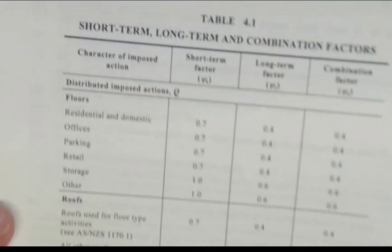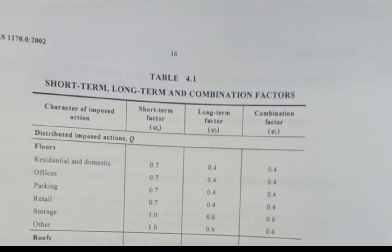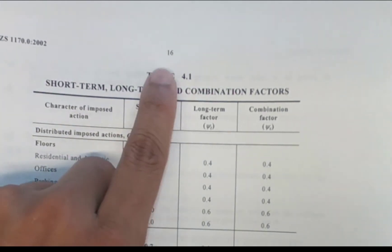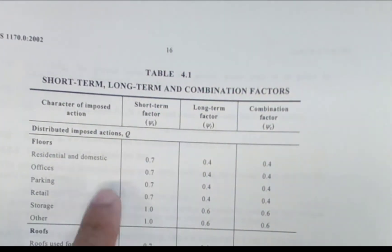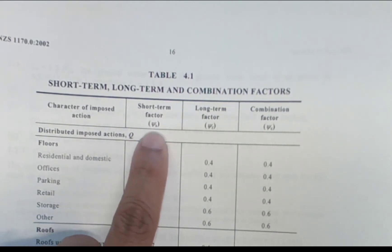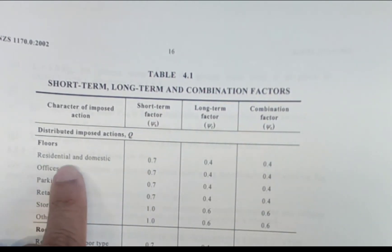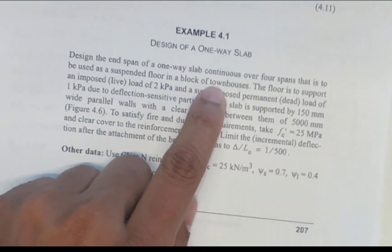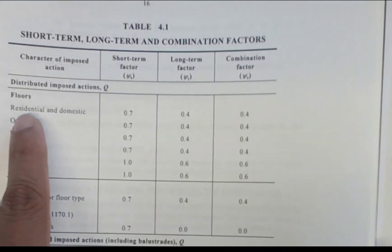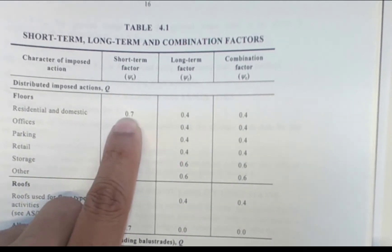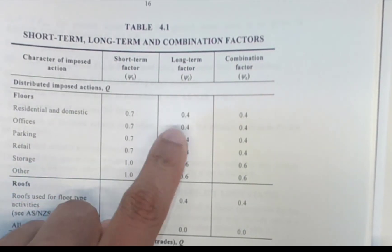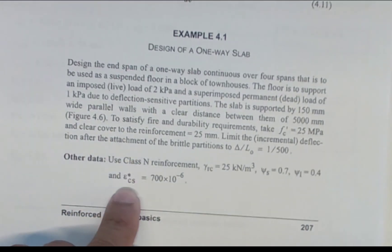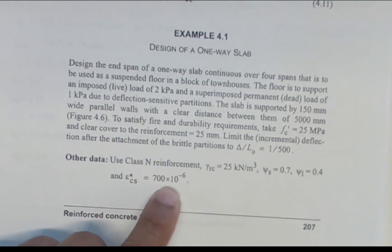This data is given in the question, but you can also take it from AS/NZS 1170.0:2002, page 16, Table 4.1, which gives the short-term factor psi-s as 0.7 for residential and domestic occupancy — consistent with townhouses. The short-term factor is 0.7, the long-term factor is 0.4, and the shrinkage strain is 1000 times 10 to the minus 6.